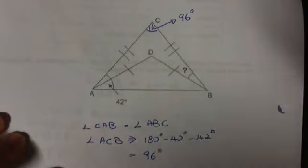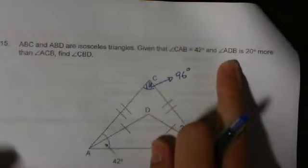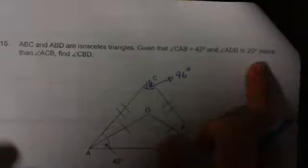It says that angle ADB is 20 degrees more than angle ACB. So angle ADB is 96 degrees plus 20 degrees equals 116 degrees.